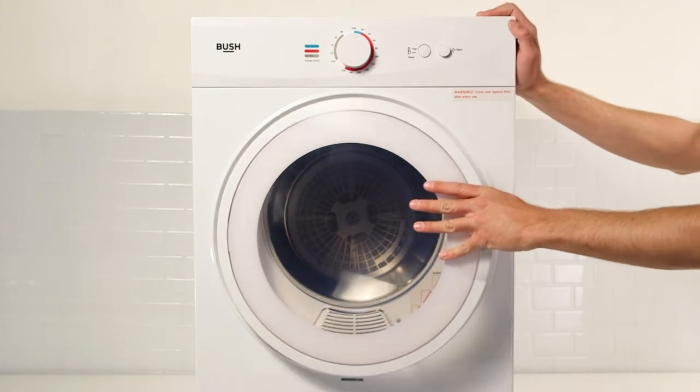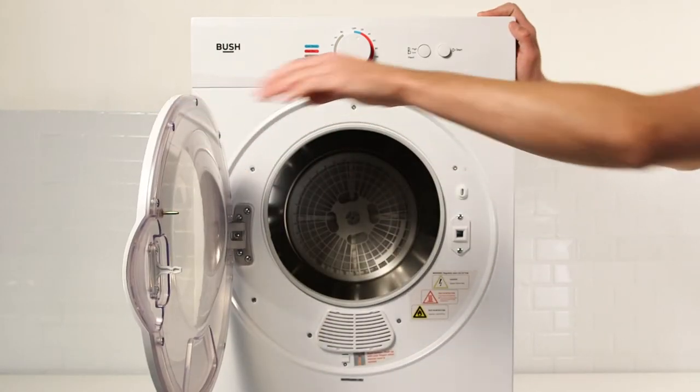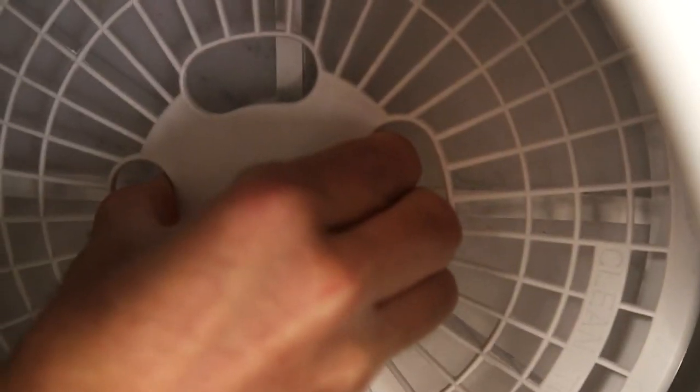Firstly, open the tumble dryer door. Then, firmly pull the lint filter away from the inside of the tumble dryer.